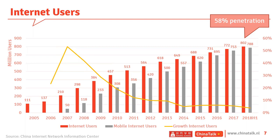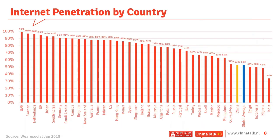If you look at that 58% Internet penetration and compare it to the rest of the world — these figures from a company called We Are Social have it at 53% — let's say it's somewhere between 50 and 60%. The Internet penetration in China is actually just the global average. Compared to the rest of the world, a lot of developing countries in Southeast Asia are doing much better. So there is still a lot to win, even though in absolute numbers there are many people online.